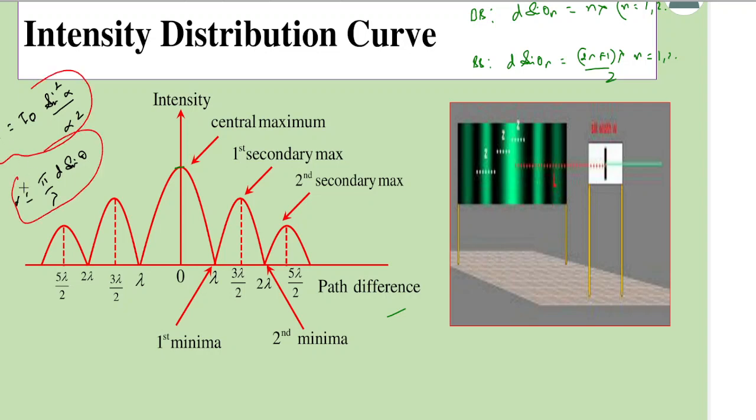If we use this formula here, I₀ is the central maximum intensity. The intensity here is I₀/22, this intensity is I₀/61, and this is another intensity value.